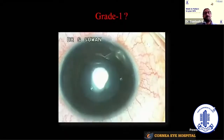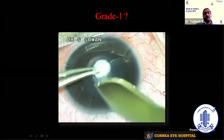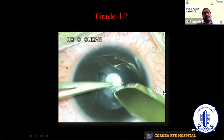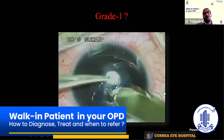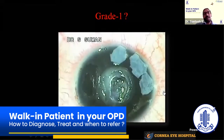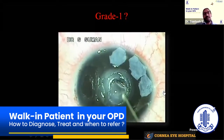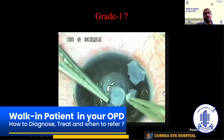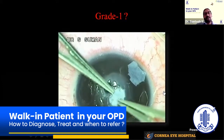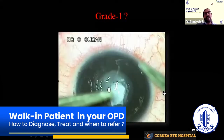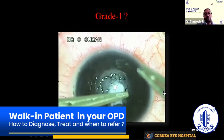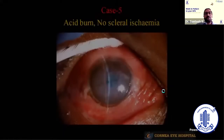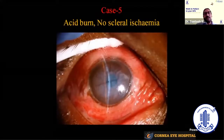However, this case also had no limbal or conjunctival involvement, but lime was stuck only in the center of the cornea, continuously melting it centrally. To prevent perforation, I had to perform multiple amniotic membrane transplants. This led to a central corneal scar, and the patient later underwent DALK for vision restoration. This shows that classification is not 100% complete — it has limitations.